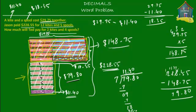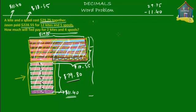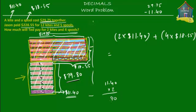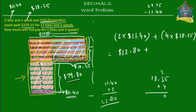Now we can find how much 2 kites and 4 spools will cost. We compute 2×$11.40 plus 4×$18.35. Two times $11.40 is $22.80. Four times $18.35: 4×5=20, carry 2; 12+2=14; 8×4=32+3=35, carry 3; 4×4+3=19 — so 4 spools cost $73.40. Two kites cost $22.80 and four spools cost $73.40.